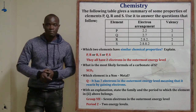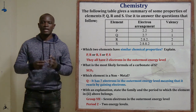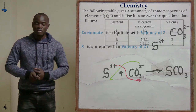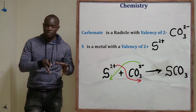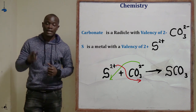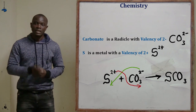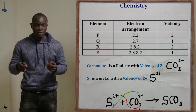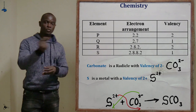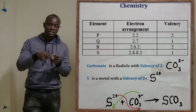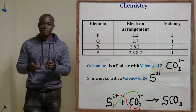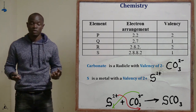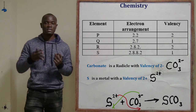Question part b asks for the formula of the carbonate formed by element S. Carbonate is a radical with a valency of 2 negative. Element S has configuration 2,8,8,2, so with 2 electrons in the outermost level, it is easier for S to lose two electrons to become stable (2,8,8) than to gain six electrons. Therefore, element S reacts by losing two electrons and has a valency of 2 positive.